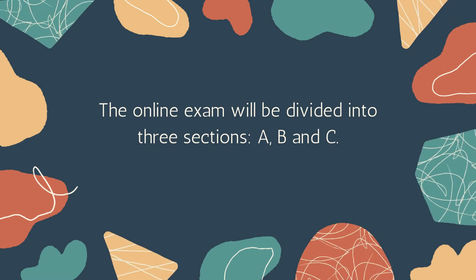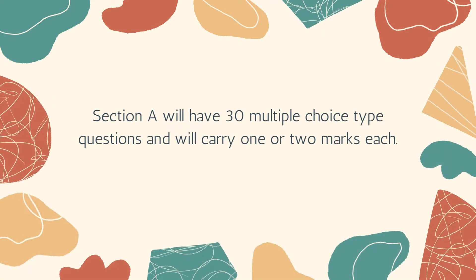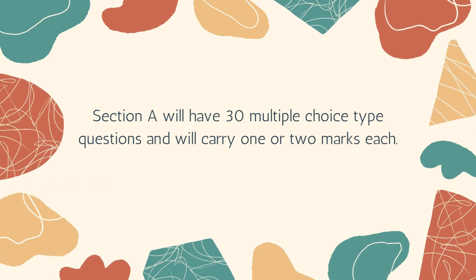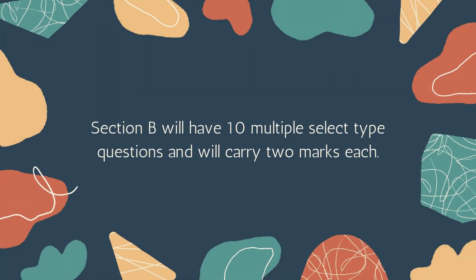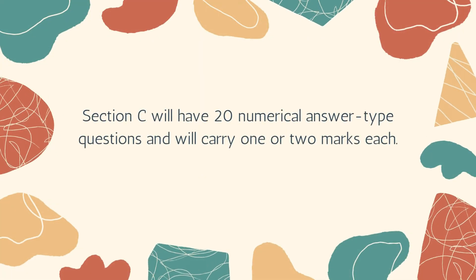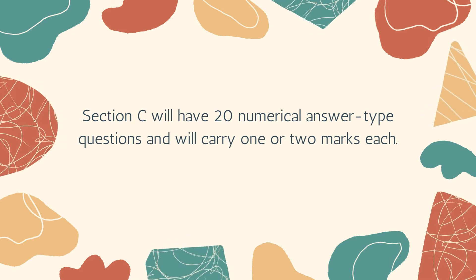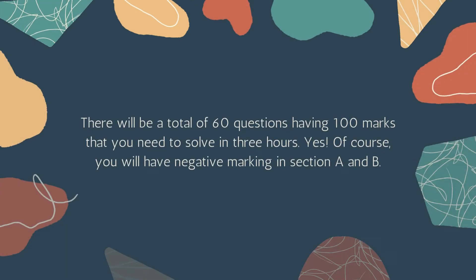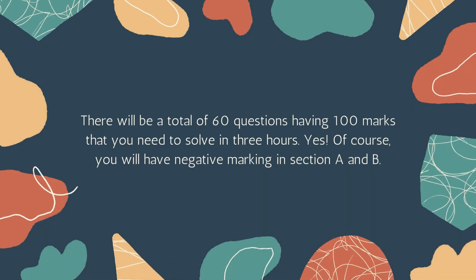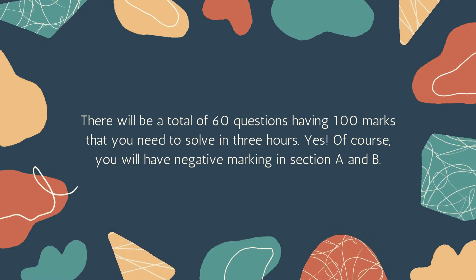IIT JAM 2023 exam pattern: The online exam will be divided into three sections — A, B, and C. Section A will have 30 multiple choice type questions carrying one or two marks each. Section B will have 10 multiple select type questions carrying two marks each. Section C will have 20 numerical answer type questions carrying one or two marks each. There will be a total of 60 questions carrying 100 marks, to be solved in three hours.